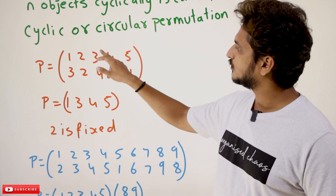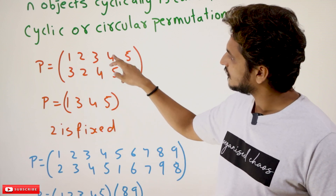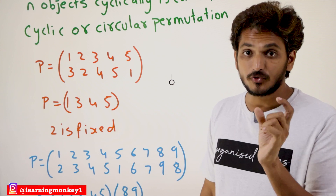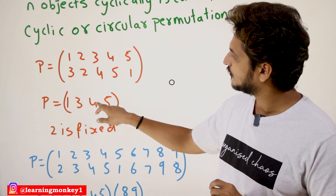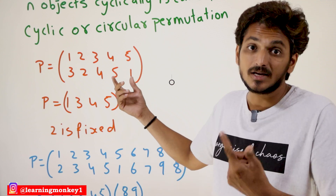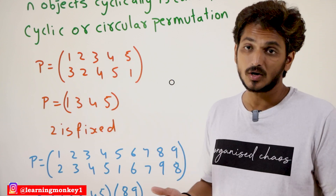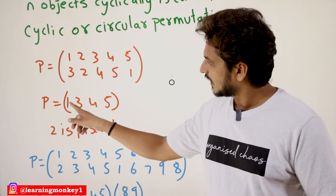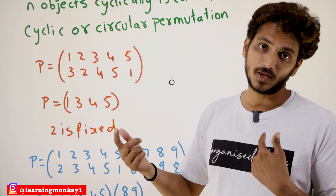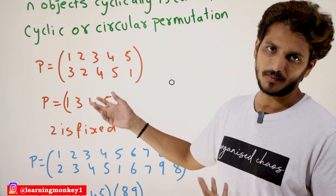Let us take P equal to: 1→3, 2→2, 3→4, 4→5, 5→1. In this, we are forming a cycle: 1 maps to 3, 3 maps to 4, 4 maps to 5, 5 maps back to 1. All these elements form a cycle: (1, 3, 4, 5). Since 2 maps to 2, it is fixed and no need to include it. So this cyclic permutation is represented as (1 3 4 5).